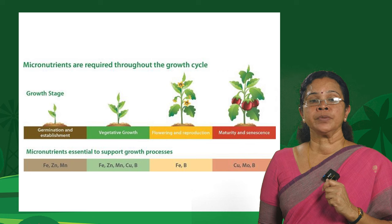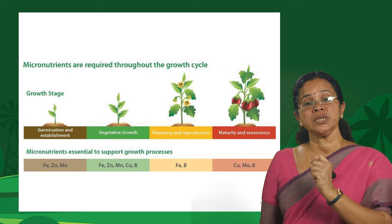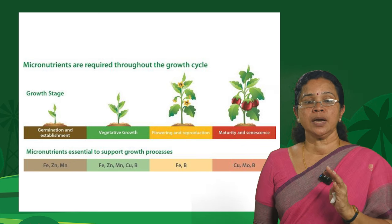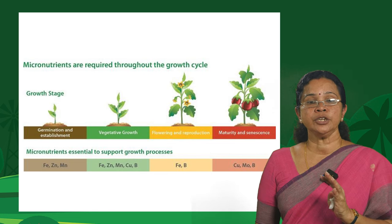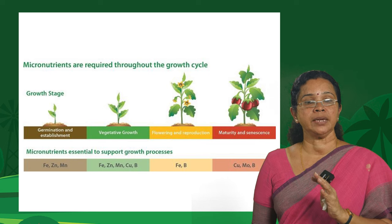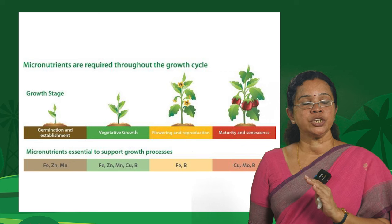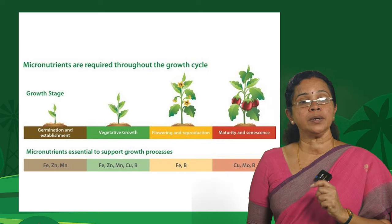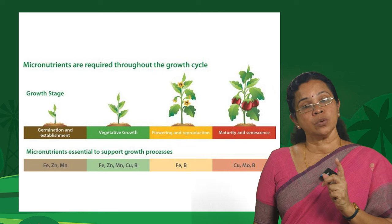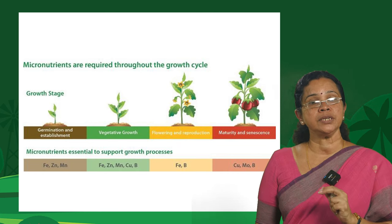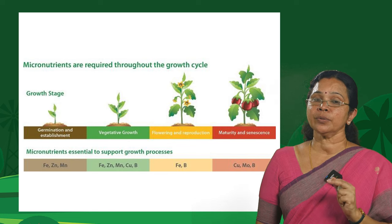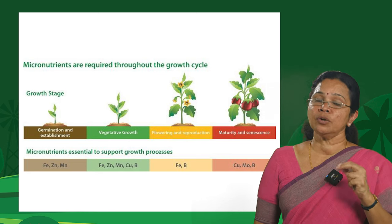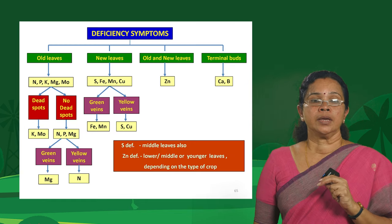For micronutrients — throughout the growth stage of the crop these are required. Specifically during germination and establishment, iron, zinc and manganese are very crucial. During vegetative growth, iron, zinc, manganese, copper and boron are important. During flowering and reproduction, iron and boron are crucial — especially boron. During the maturity phase, copper, molybdenum and boron are needed. So throughout the growth cycle, micronutrients are required in smaller quantities, yet these are the ones usually neglected in favor of nitrogen, phosphorus and potassium.